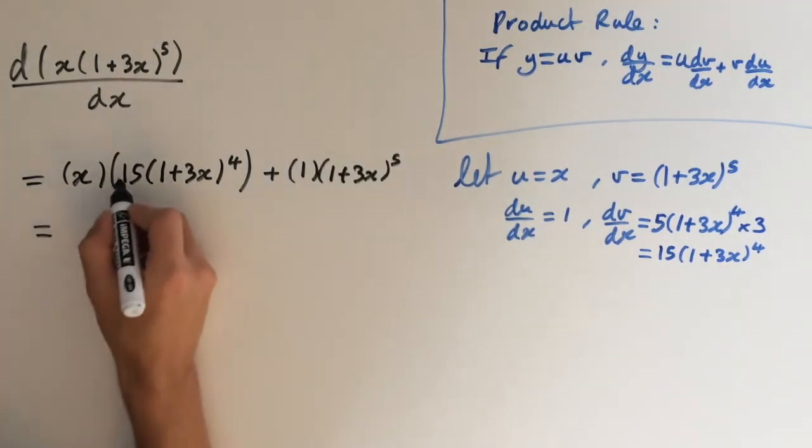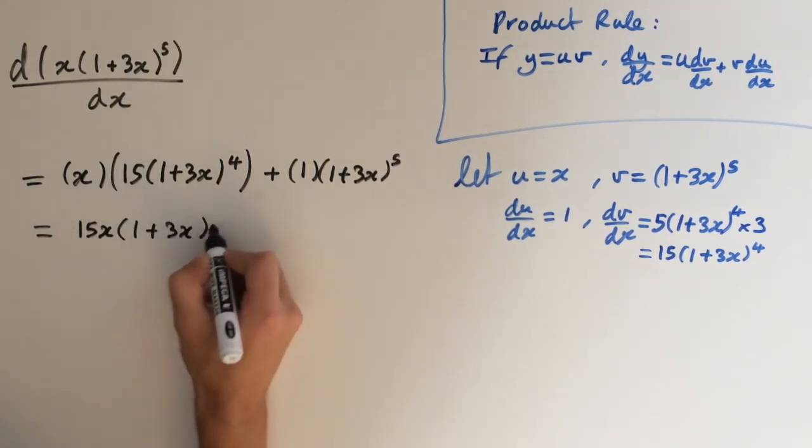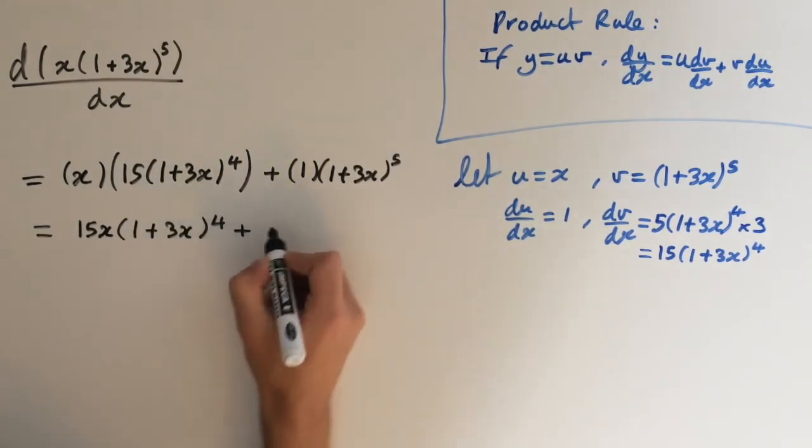So let's simplify this a bit, so we've got 15x here times 1 plus 3x to the power of 4, plus 1 plus 3x to the power of 5.